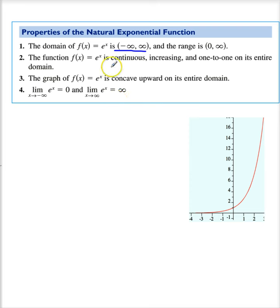The function e to the x is continuous, increasing, and 1 to 1 over the entire domain, and the graph is concave up over its entire domain.